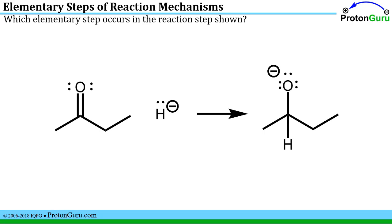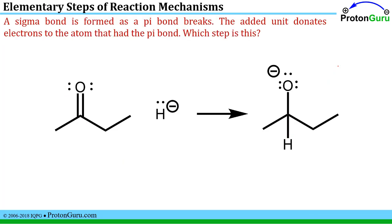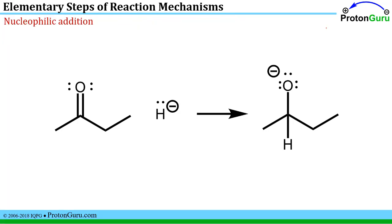We have to figure out what's happening. We see that there's a new bond from the hydrogen to the carbon, so you're making that sigma bond. At the same time, you're pushing the electrons from that pi bond up to this other atom to break that pi bond, and that's how you get this structure here. So what type of reaction step is characterized by a sigma bond forming as a pi bond breaks, where the added unit donates the electrons to the atom that had the pi bond? This is a nucleophilic addition step, where a nucleophile adds to a pi bond.